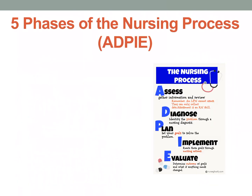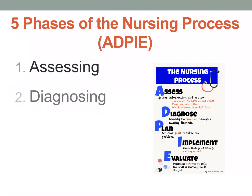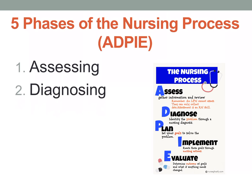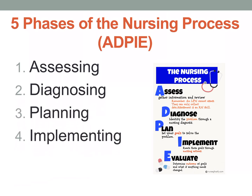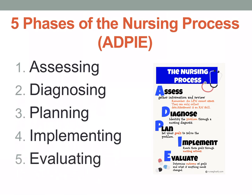We have five phases of the nursing process, using the mnemonic ADPIE. A stands for assessing, D stands for diagnosing, P stands for planning, I stands for implementing, and E stands for evaluating. So these are your five phases of the nursing process — ADPIE.